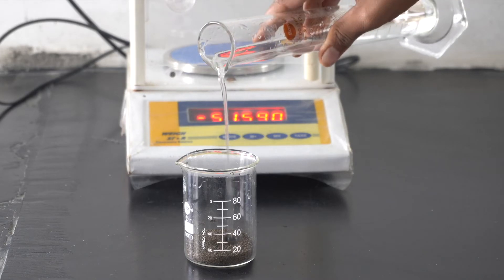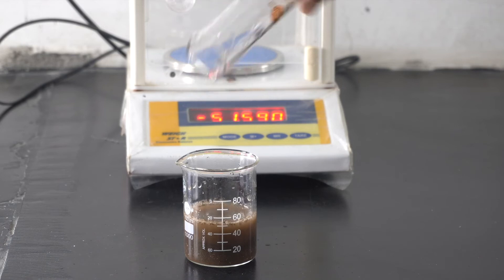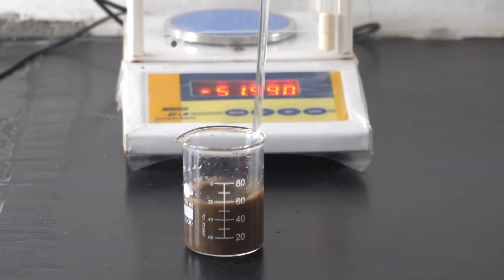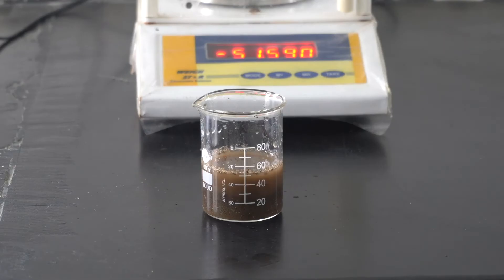Add 40 ml of distilled water into 20 grams of soil sample and stir it with the help of a glass rod or stirrer to mix for 30 minutes. After 30 minutes of mixing, let it stand for an hour.